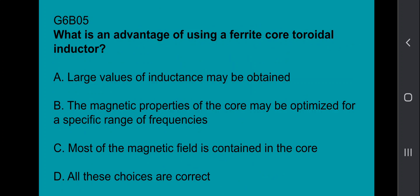G6B05: What is an advantage of using a ferrite core toroidal inductor? All of these choices are correct: large values of inductance may be obtained, the magnetic properties of the core may be optimized for specific range of frequencies, and most of the magnetic field is contained in the core.